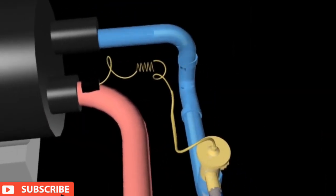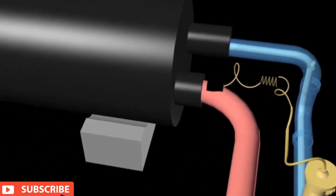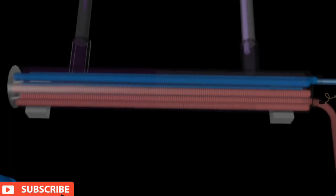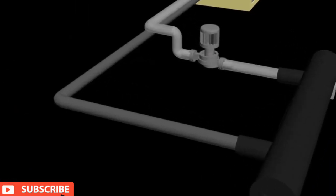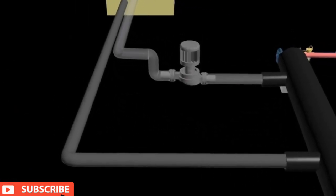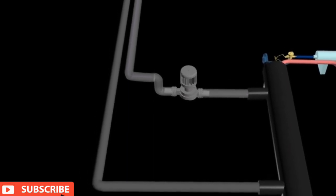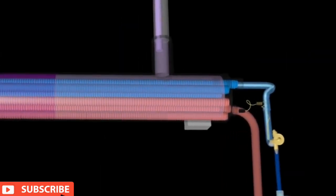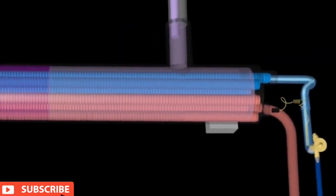Evaporator. The refrigerant in low pressure liquid form coming out from the expansion valve flows into the evaporator at low temperature. In the evaporator, heat from the chilled water coming out of the air handling unit is absorbed by the refrigerant due to the temperature difference produced. When the low temperature and pressure liquid refrigerant absorbs heat from the chilled water, the refrigerant evaporates into low pressure gas.